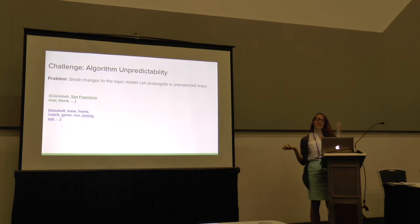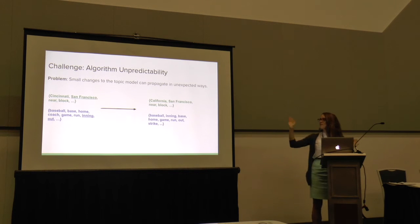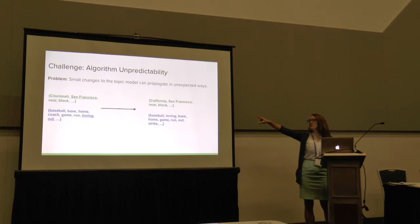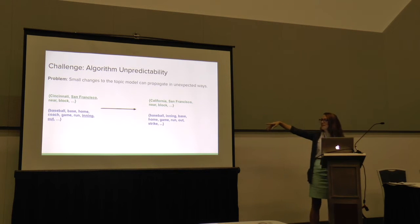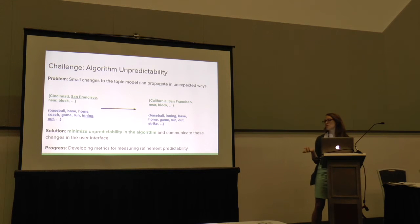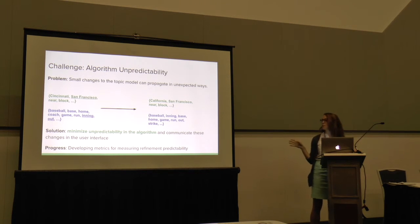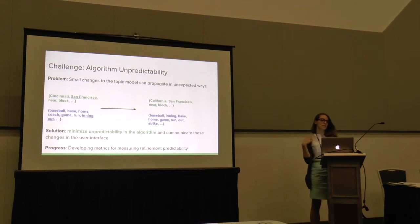Another challenge is that interactive topic modeling is really unpredictable. A user might specify refinements — like merging San Francisco or adding baseball words — but then the model runs and produces something completely unexpected. For example, California might get pulled in and Cincinnati moved out, or coach might leave and new baseball words like strike and home might come in. A user won't understand why they got different results than what they specified. Our solution is twofold: minimize unpredictability in the algorithm, and communicate changes in the user interface appropriately. We're developing metrics to measure unpredictability so we can compare ITM algorithms and pick the most predictable implementation.